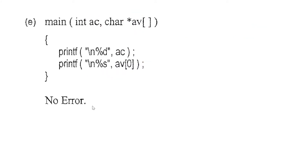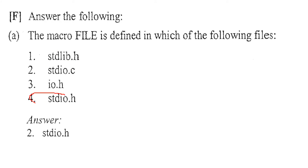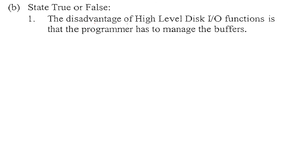The macro FILE is defined in which of the following files? The macro FILE is defined in stdio.h. True and false: the disadvantage of high-level disk input/output functions is that the programmer has to manage the buffers — the answer is false, because in high-level IO we don't have to worry about the buffers. In low-level IO we do have to consider buffer handling.